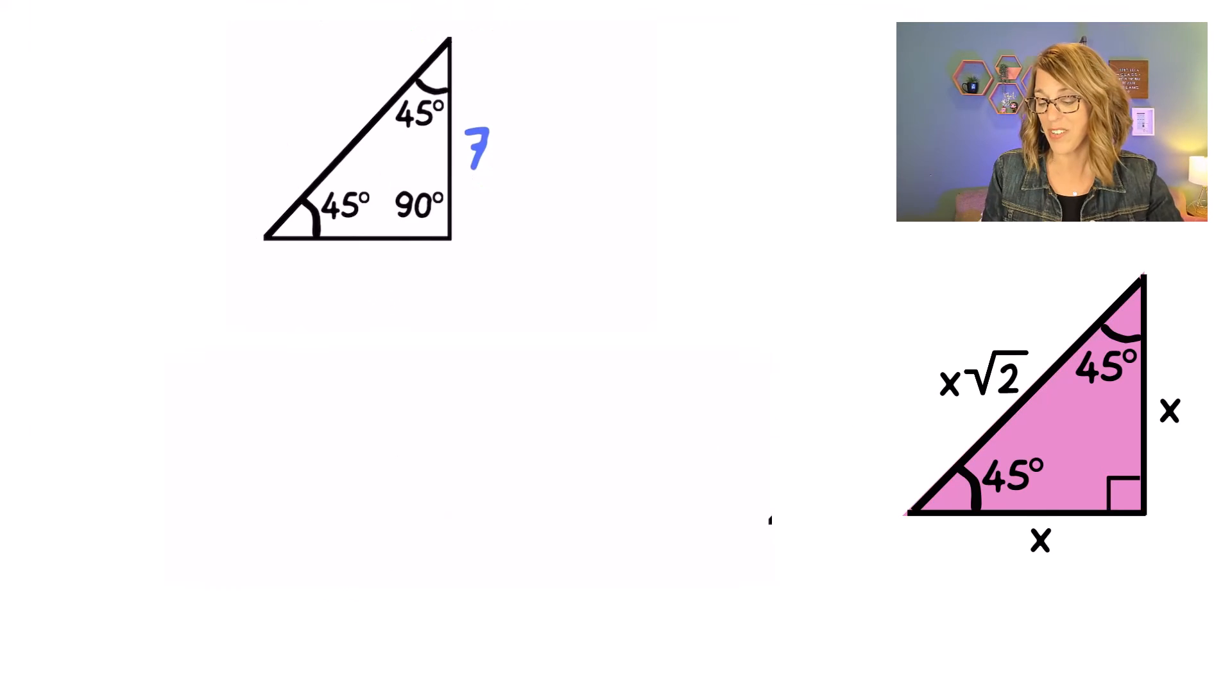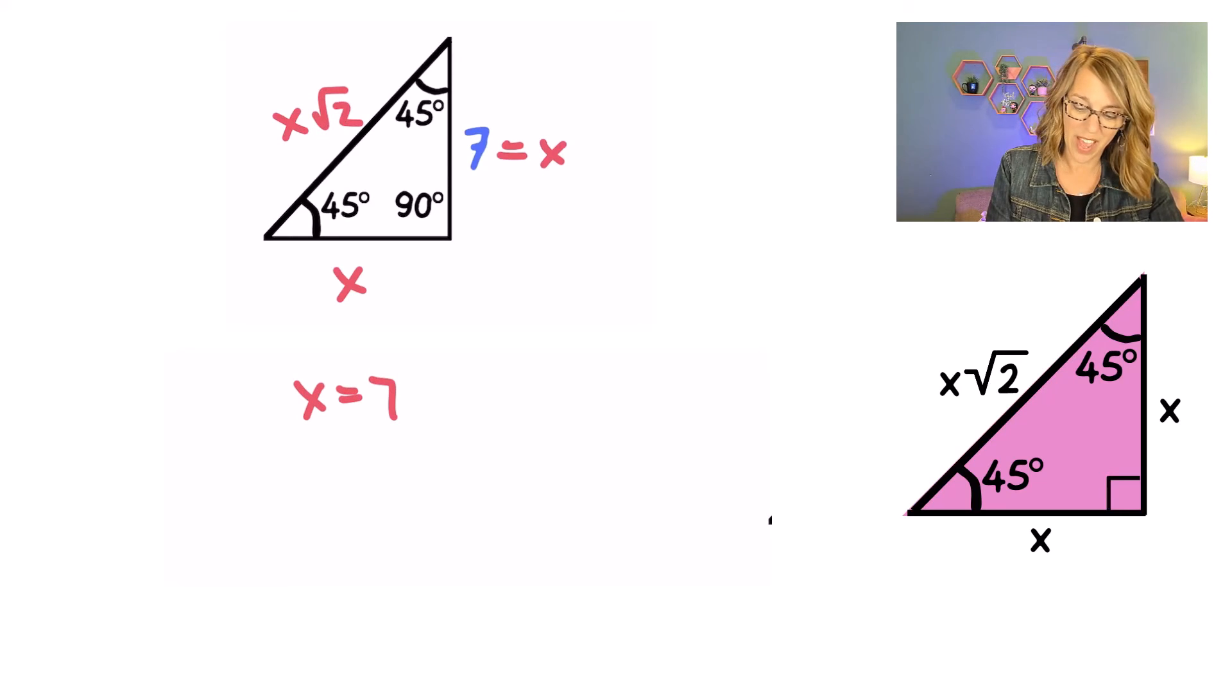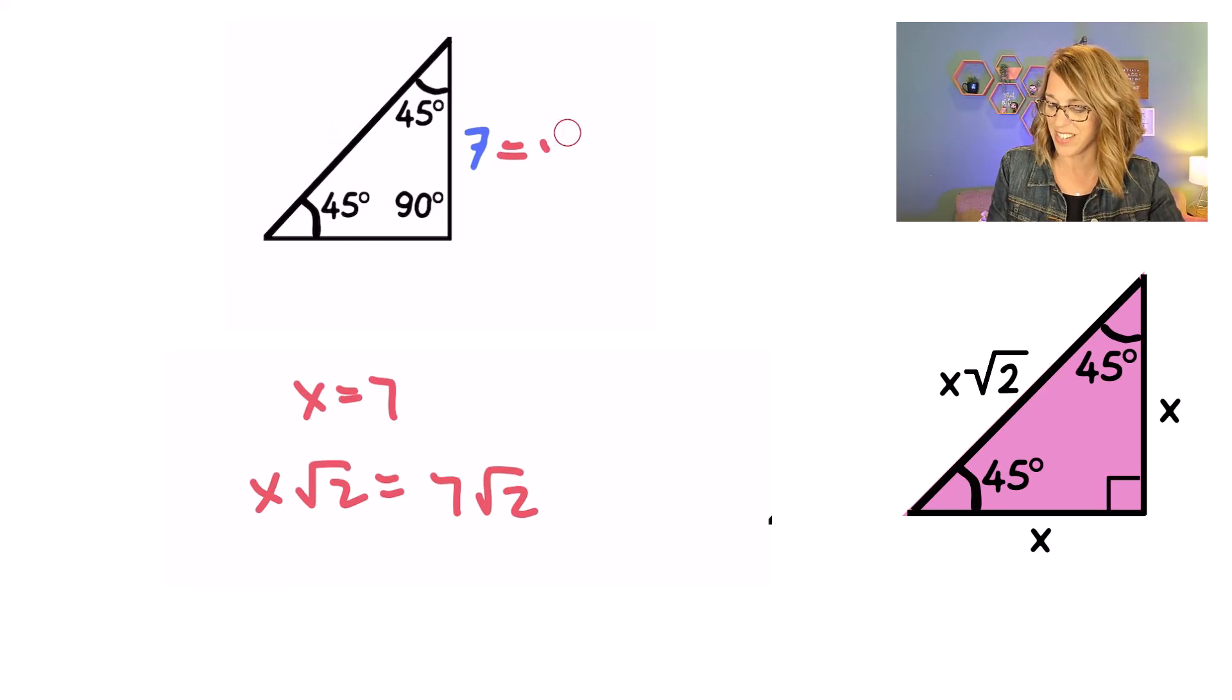Using this template, I know that both sides are equal to my X, which means that X is equal to 7. And my hypotenuse is going to be an X radical 2. So that hypotenuse is an X radical 2 or a 7 radical 2. Let's go ahead and replace our other two missing sides.